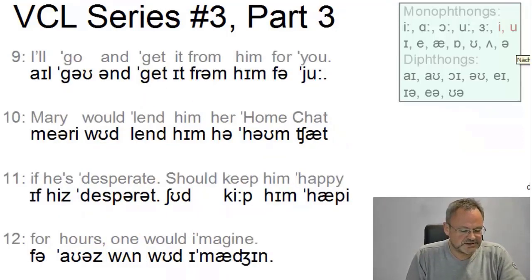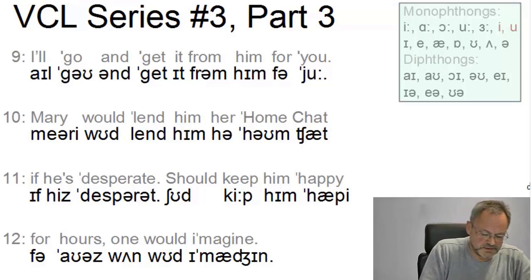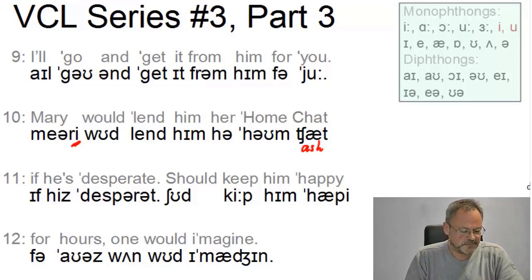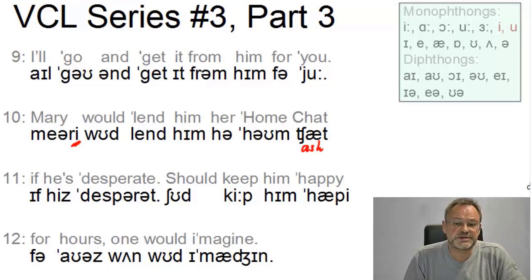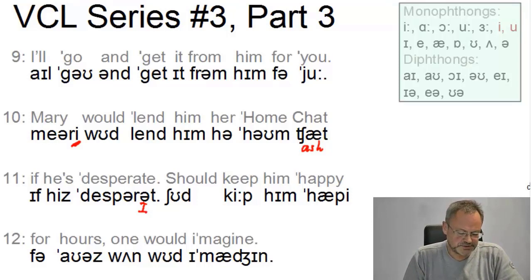Let's now look at the last four lines. Line nine: 'I'll go and get it from him for you' — nothing problematic here; we'll look at the weak forms shortly. Line ten: 'Mary' — in 'Mary' you have a weak e again. 'Mary would lend him her home chat' — remember this symbol name? Ash. Line eleven: 'If he's desperate' — the LPD notation provides an alternative here: instead of having the schwa at the end, we could have the short e — 'desperate' — so this is an alternative. 'Should keep him happy' — another ash.